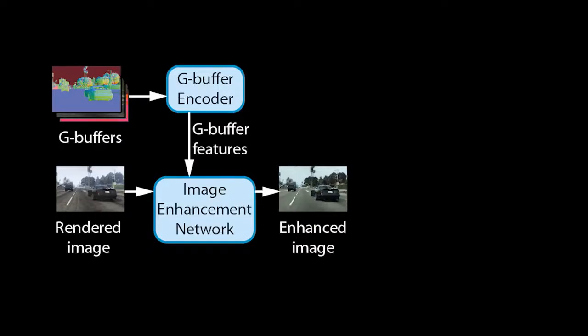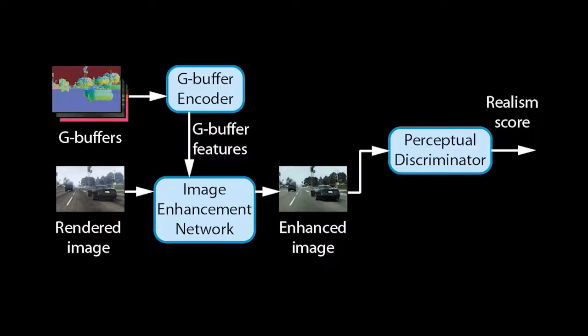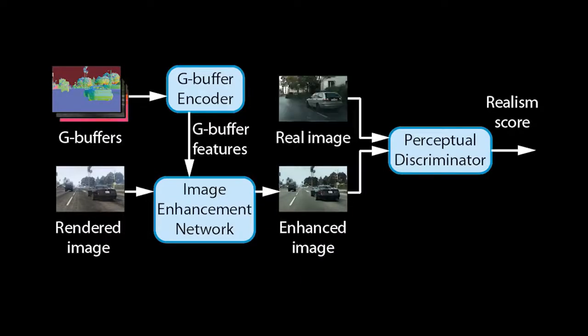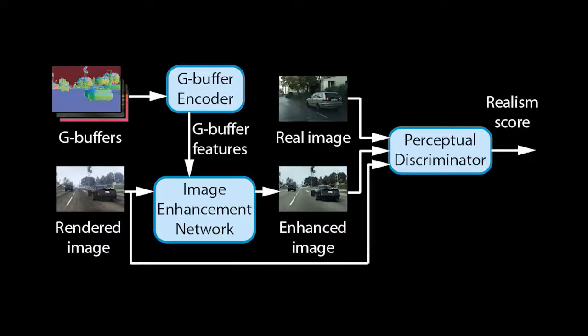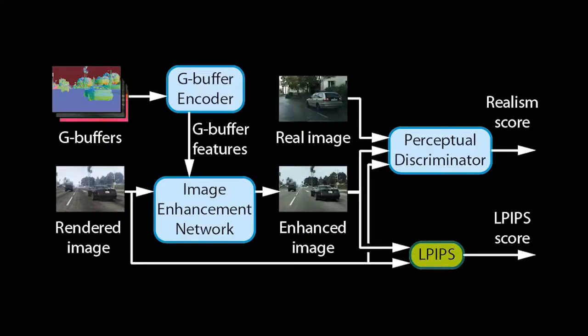To train our networks for enhancing realism, we employ a perceptual discriminator. For each image it takes in, it produces a realism score. To make it understand what the real world looks like, we also feed it real photos. To ensure that our networks retain the structure of rendered images, we further add them to the discriminator inputs and employ a perceptual loss.